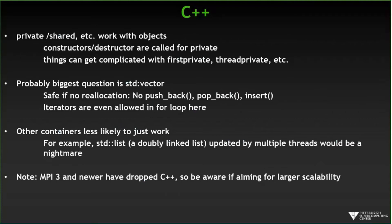Private and shared work great with objects, and constructors are recalled for private. Things get more complicated with first-private or thread-private when you think about what you're asking and where data comes from. In the HPC world, everybody wants to know how well standard vector works. If you're using vector containers, everything works well and is safe as long as you don't do any reallocation. Push-back, pop-back, and insert can trigger reallocation, in which case all bets are off — that's a disaster because things have been moved around in memory. If you understand what the containers are doing, you understand that's a limitation.